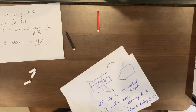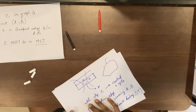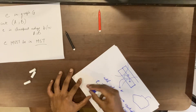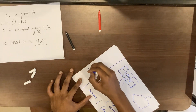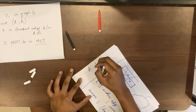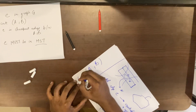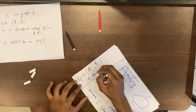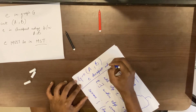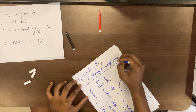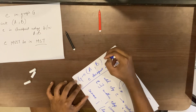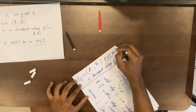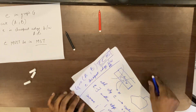By contradiction, the cut property is proved: if there is a cut A and B in a graph G, and E is the cheapest edge between A and B, then E must be in the minimum spanning tree.